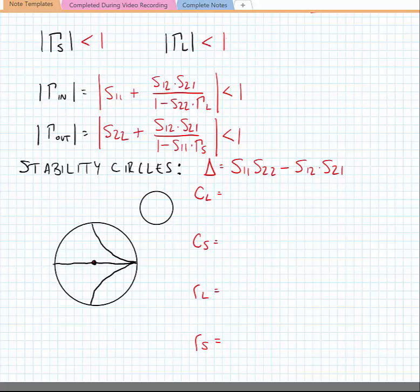From this we can find the center of a circle relative to the center of the Smith chart that would define a stability circle. What we're talking about would be the distance from the center of the Smith chart to the center of the circle that's drawn here.